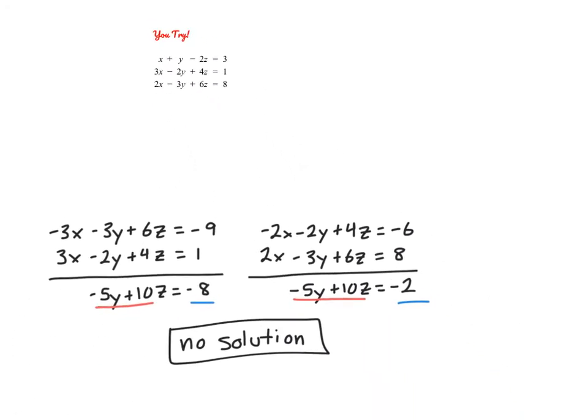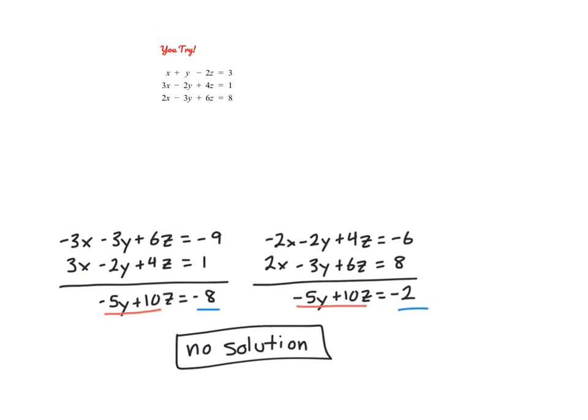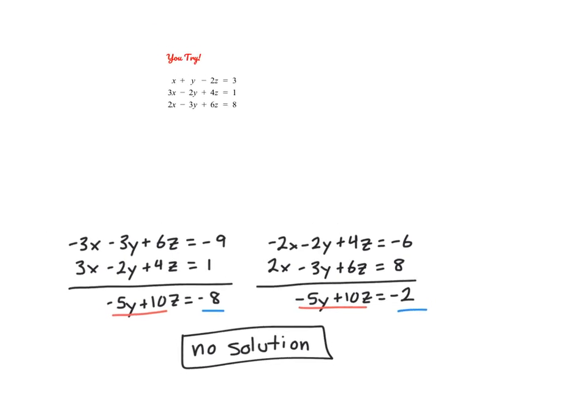So once again, here I eliminated my x values twice, and then you get two equations. So we actually have negative 5y plus 10z equals negative 8, and then negative 5y plus 10z equals negative 2. So here's our inconsistency. So this system has no solution. So hopefully now you know what to look out for.